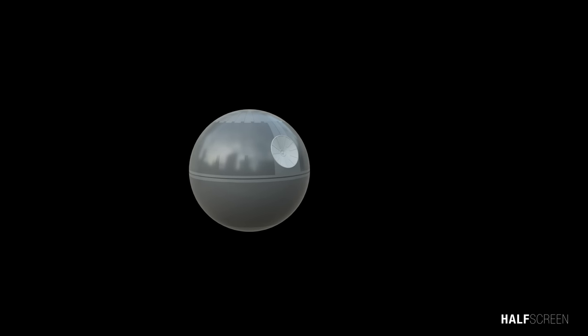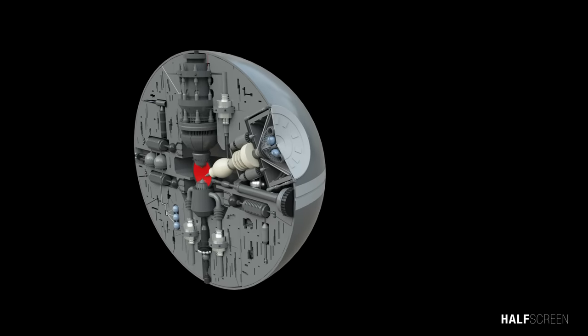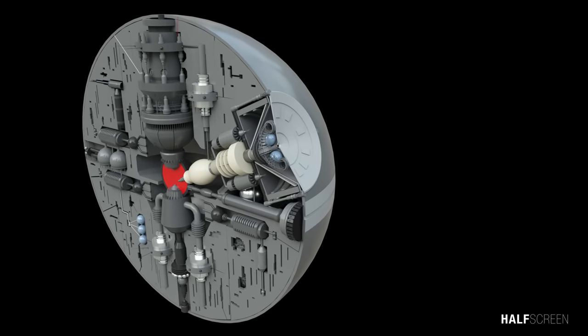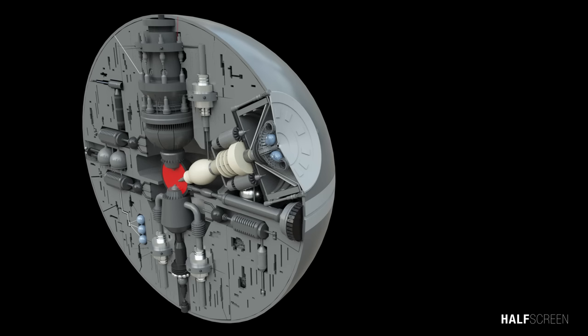Let's take a look inside the Death Star. The Death Star has sublight and hyperdrive engines. The sublight engines allow it to move within star systems. The hyperdrive lets it travel through hyperspace and travel between systems.